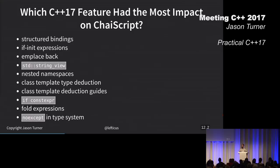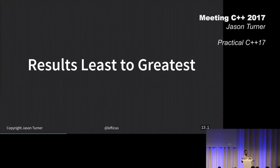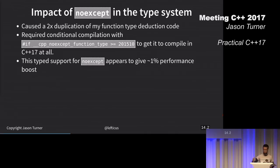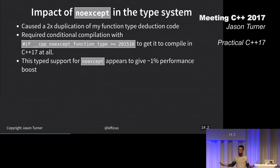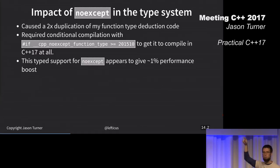I'm going to reveal them in the order of least to greatest as far as how I thought they were. If you thought noexcept in the type system was the most important thing, you'd be wrong. Noexcept effectively caused a two times duplication of all of my template deduction, function deductions. I mentioned that ChaiScript has lots of templates for automatically deducing the types of functions that are passed to it. This is huge for me.